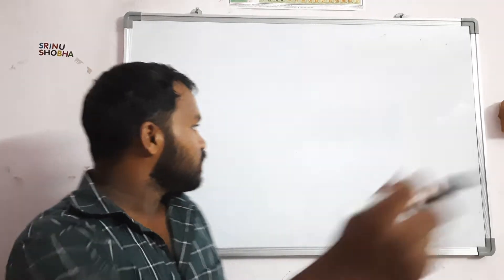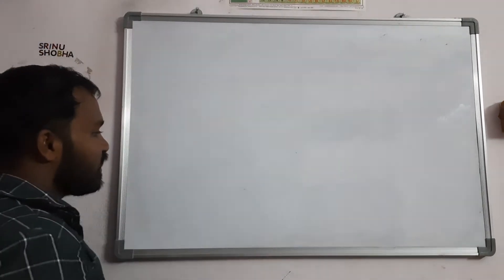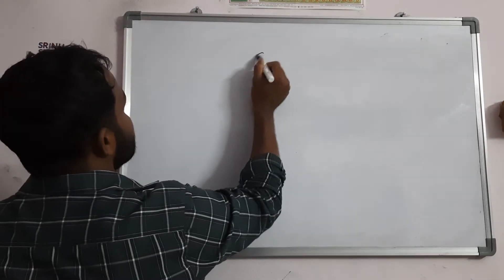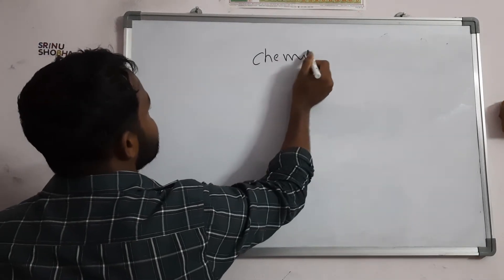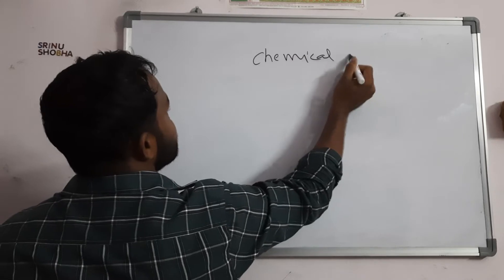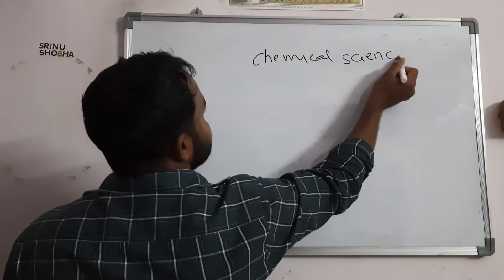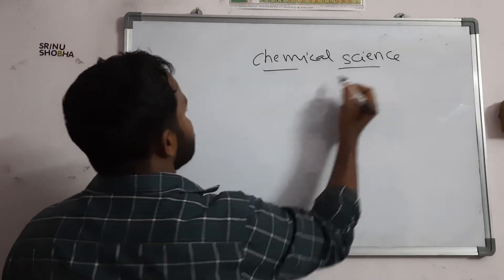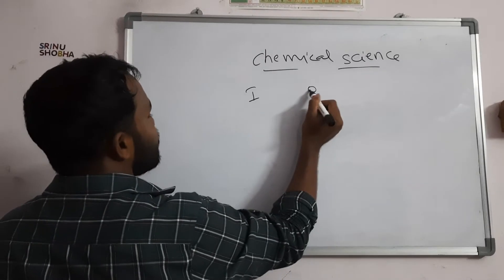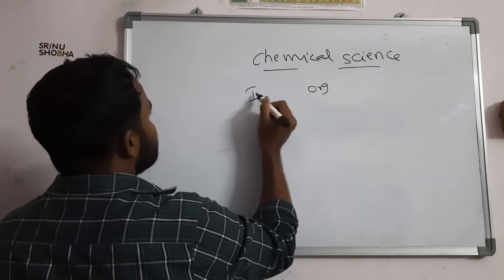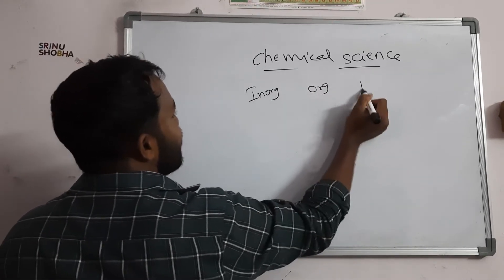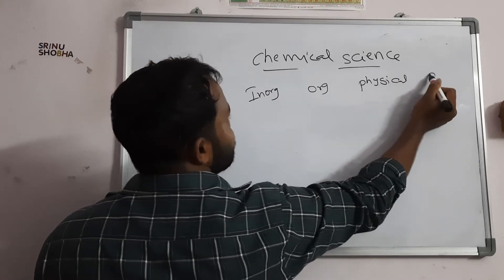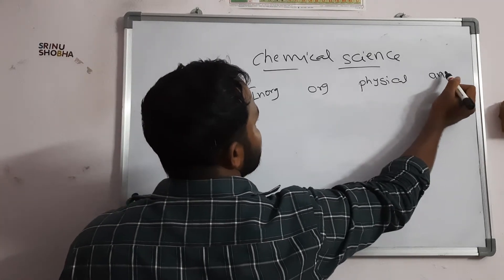I am going to explain the strategy of the chemical science paper. In chemical science, we have inorganic, organic, physical, and analytical. Physical and analytical are specializations.